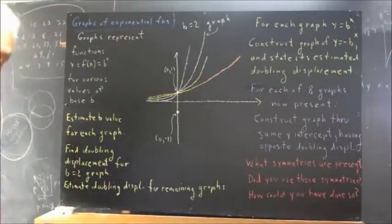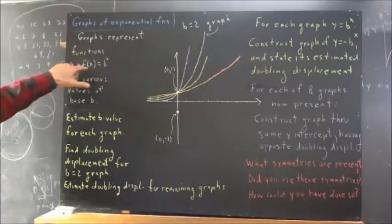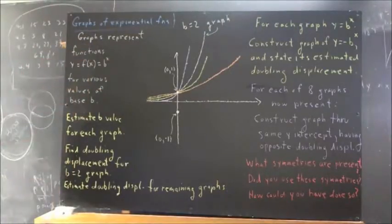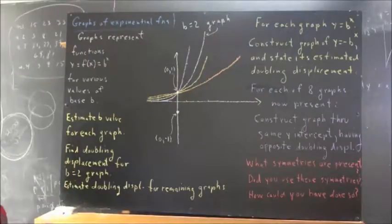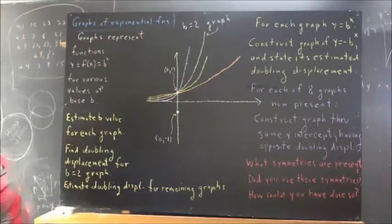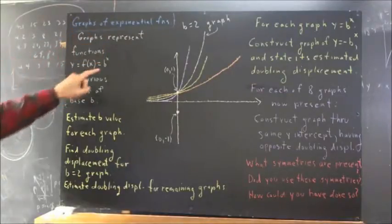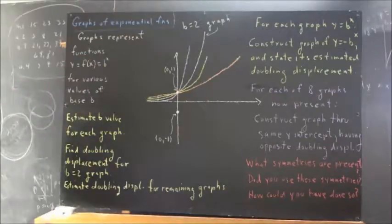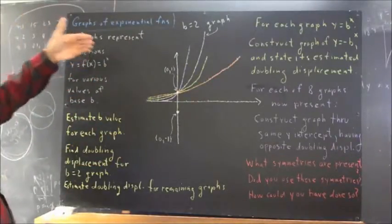Remember that an exponential function can be represented as y equals f of x equals b to the x. So, b to the x is the form of a basic exponential function. We also have graphs of a times b to the x. These are just graphs of plain old b to the x, 1 times b to the x.